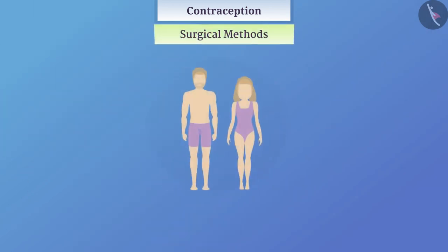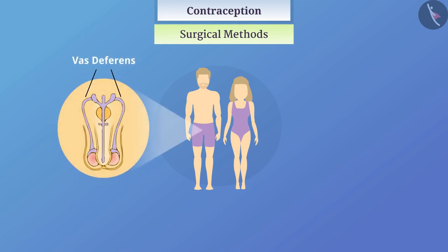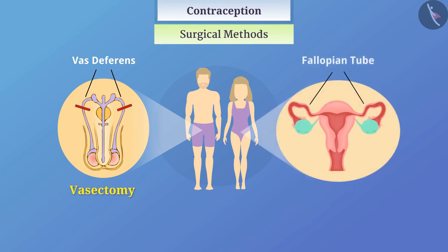Surgical methods are useful for those who do not want further pregnancy. In one method, sperm transfer is prevented by blocking the male vas deferens — this technique is called vasectomy. In the same way, eggs are prevented from reaching the uterus by blocking the fallopian tube — this technique is called tubectomy.